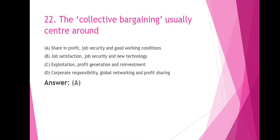Collective bargaining usually centers around: option A share in profit, job security and good working conditions; option B job satisfaction, job security and new technology; option C exploitation, profit generation and reinvestment; option D corporate responsibility, global networking and profit sharing. The right answer is option A: share in profit, job security and good working conditions.